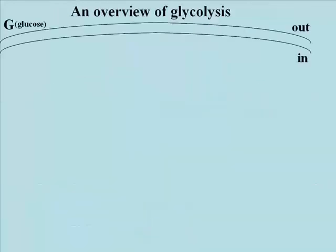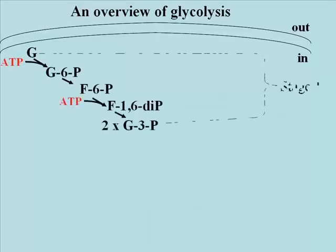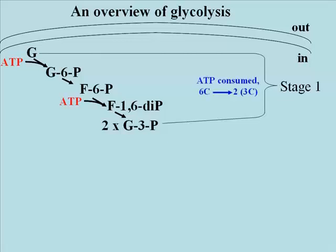Here is an overview of glycolysis. Glucose is delivered to cells where membrane proteins called glucose transporters facilitate their diffusion into the cell. In stage 1 of glycolysis, glucose is phosphorylated, then isomerized to fructose phosphate, and then phosphorylated a second time to make fructose diphosphate. In stage 1, two molecules of ATP have been consumed and a 6-carbon sugar has been split into two 3-carbon sugars.